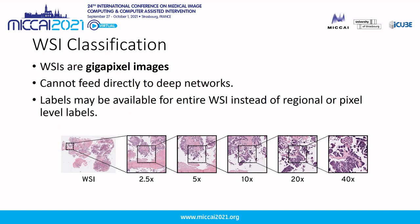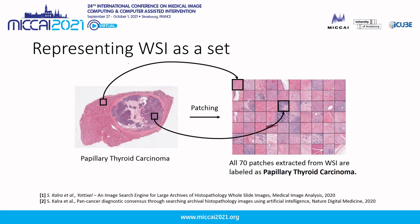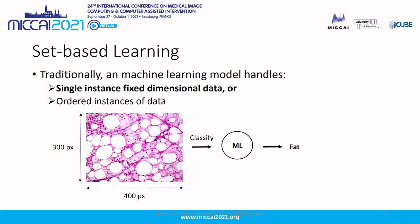Starting with the motivation. WSI classification, or whole slide image classification, is a very challenging problem because these images are gigapixel images and cannot be fed directly into a deep network. The labels for these images are not available at the regional level; rather they are available at the entire image level. In literature it has been shown that an effective way of processing whole slide images is by representing them as a set of patches called a mosaic. In this work we are exploring a set-based learning method for whole slide image classification.